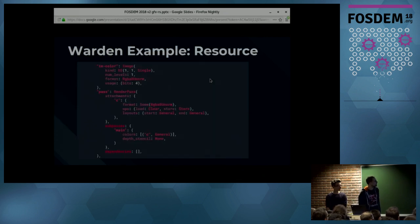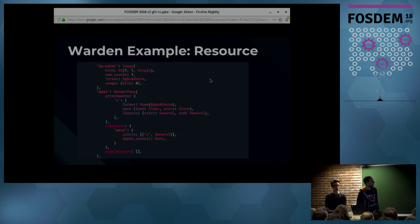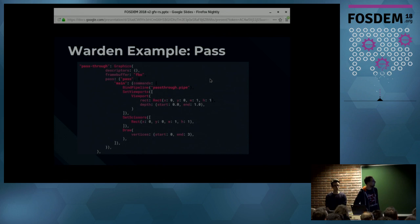This is an example of the resources. We have an image with a specified format and dimensions. We have a render pass with one attachment and one subpass — just an example of roughly how it looks. This shows the contents of the pass: setting the viewports, the pipeline, and drawing a single triangle.